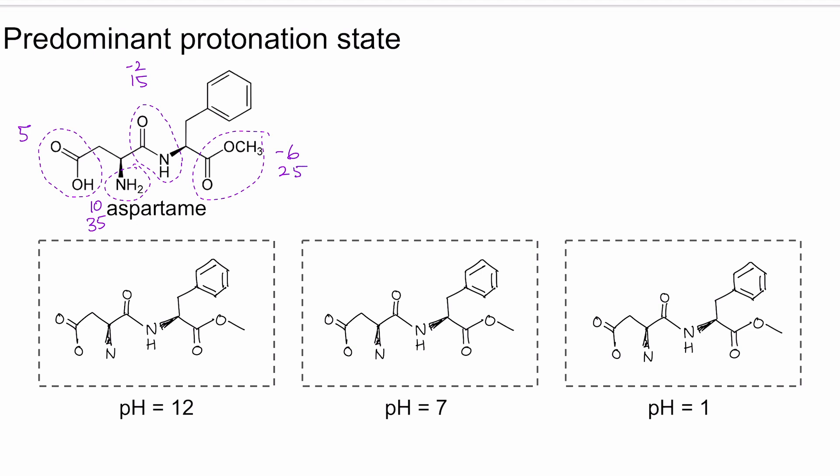All right. So we've got lots of numbers to compare. 5 is less than 12. So this carboxylic acid is deprotonated. 10 is less than 12, 35 is more than 12. So this amine stays its neutral self. Negative 2 is less than 12, but 15 is greater than 12. So this amide stays its neutral self. And then this ester, we would say negative 6 is less than 12, but 25 is more than 12. So it stays its neutral self.